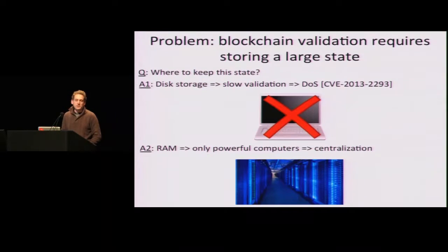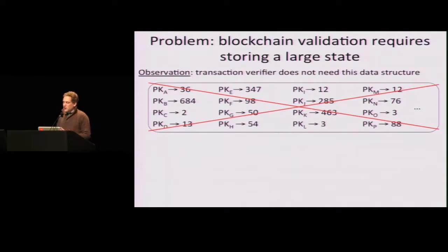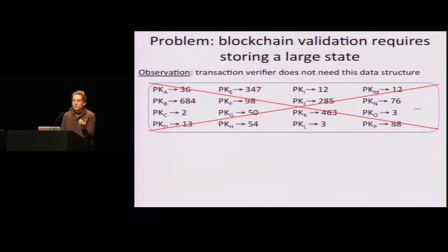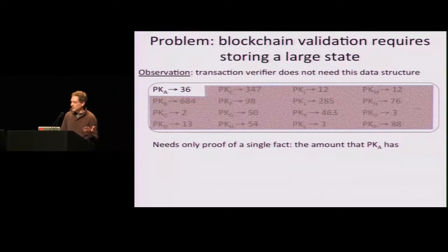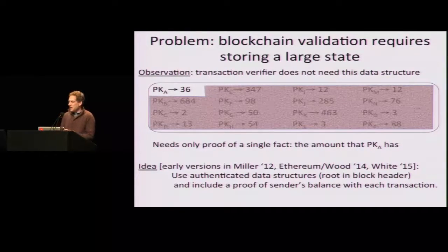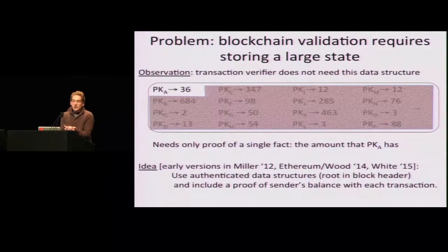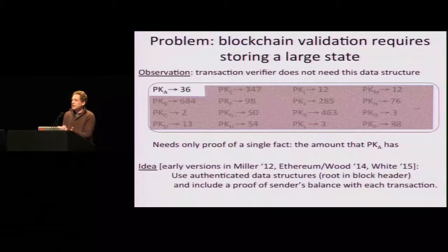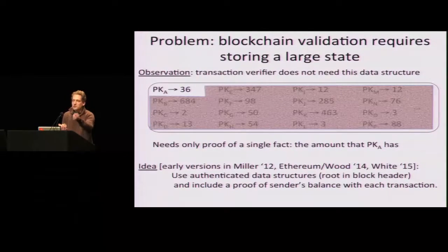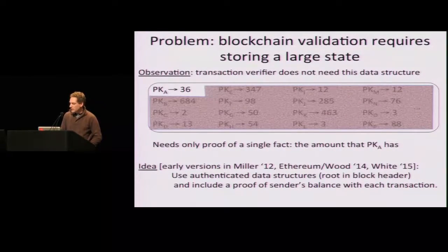The observation that has been made before us is that you really don't need to store this huge data structure. As a verifier of a transaction by Alice, you're only interested at the moment in how much money Alice has. So you want a proof of this one single fact. This idea — crystallized a bit more precisely by Bill White — is to use authenticated data structures, where Alice will prove, as part of the transaction, that she has the right amount of money. We authenticate this key-value store and show that the value associated with Alice's public key is 36, and therefore you can subtract 14 from it and still remain positive.